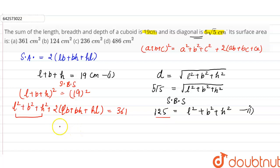We can write 125. So here 125 plus 2 LB plus BH plus HL is equal to 361 minus 125.